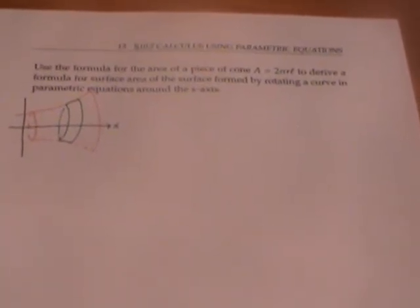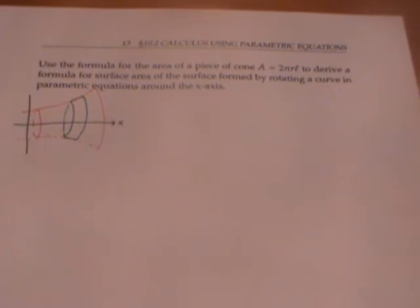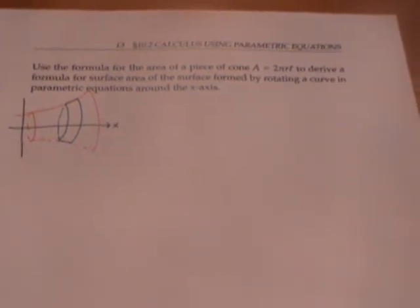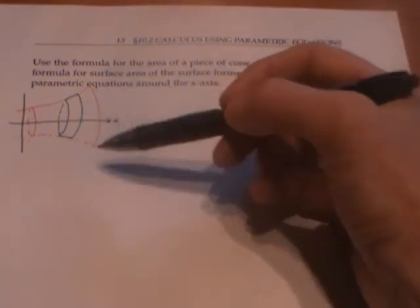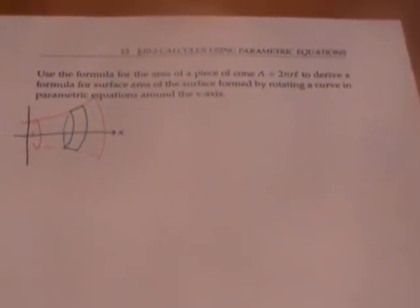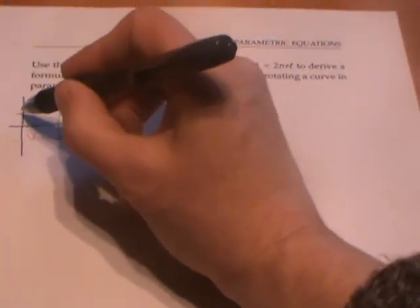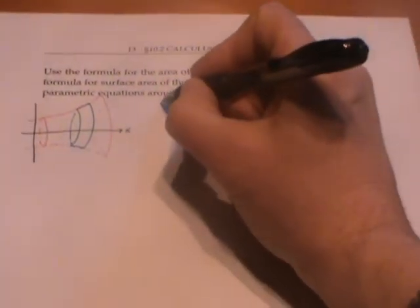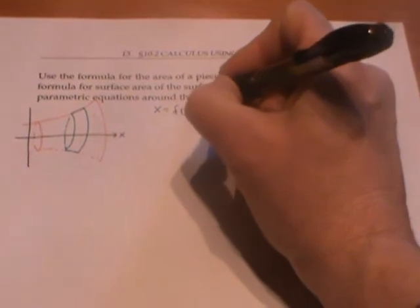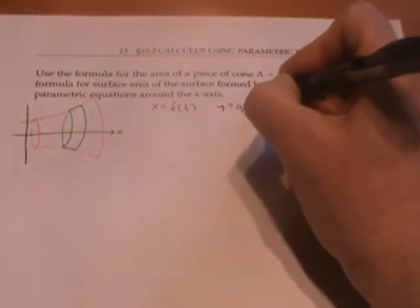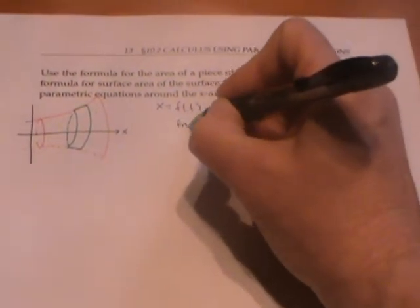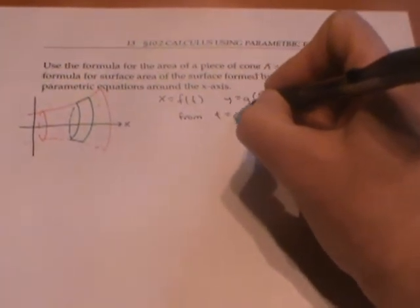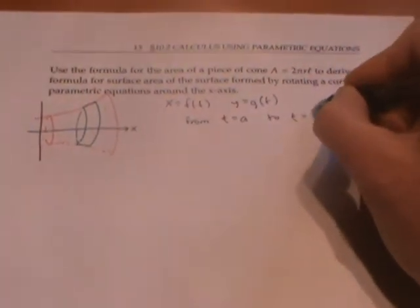Now let's use this formula to derive a formula for the surface area of a surface of revolution where we're rotating around the x-axis. I'm going to use this curve given by the parametric equations x equals f(t) and y equals g(t), where t ranges from a to b.